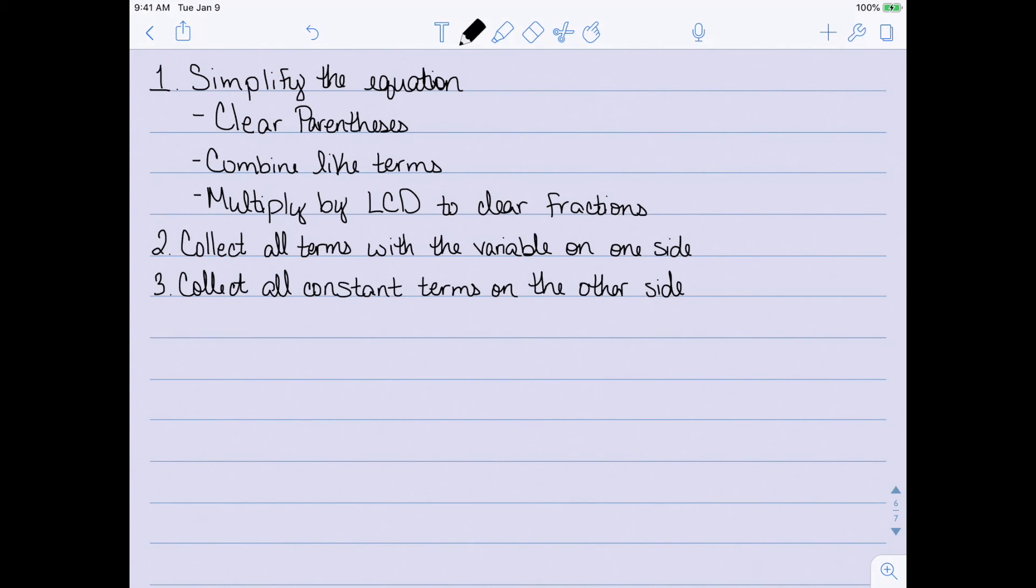We then collect all the constant terms on the other side. Anything without the variable gets moved to the other side and we combine all of those. Finally, we divide by the coefficient of the variable.